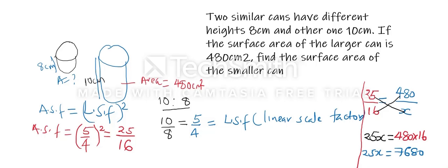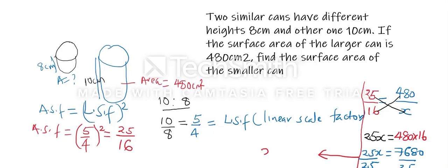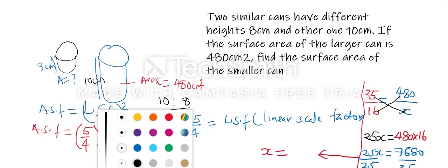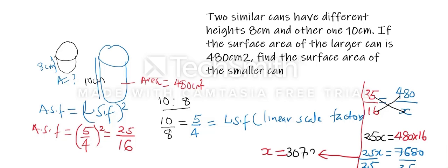To get x, we divide both sides by 25. When we divide 7680 by 25, we get x as 307.2. Therefore, x is the area of the smaller can, which is 307.2 centimeters squared.